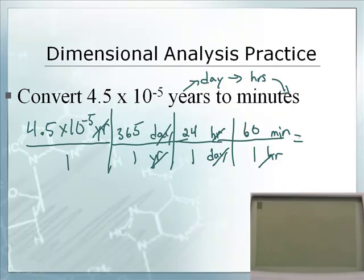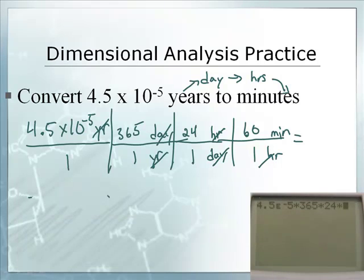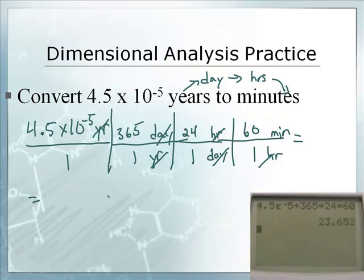So now Mr. Sams is going to type it in. Oh, you got it set up finally? I do. What do we got? 4.5 double E, second E, negative 5, times 365, times 24, times 60. And we don't have to do anything with ones.